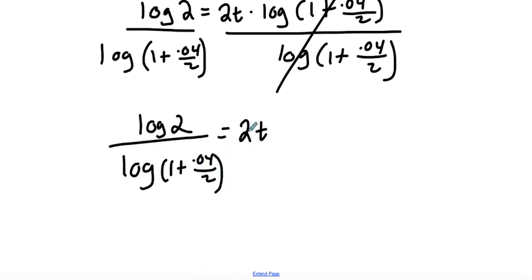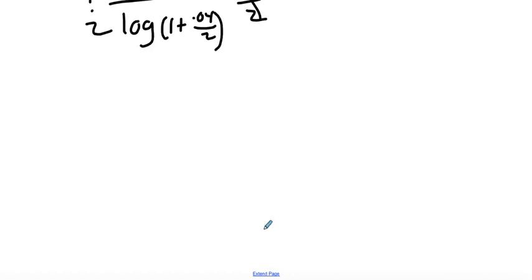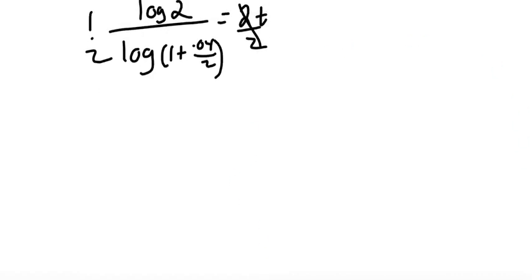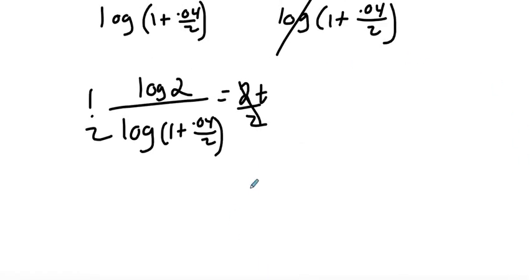Last but not least, we can divide by 2 or multiply by a half. I think that's going to be a little easier here. So we'll go ahead and just multiply that by a half, which is the same thing as divided by 2. So we'll have our exact answer now as T is equal to a half times log of 2 all over log of one plus 0.04 over 2.